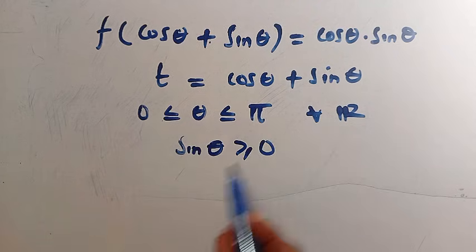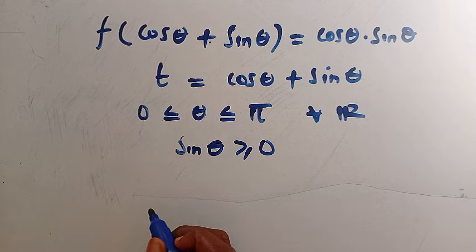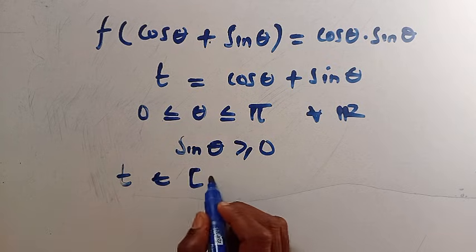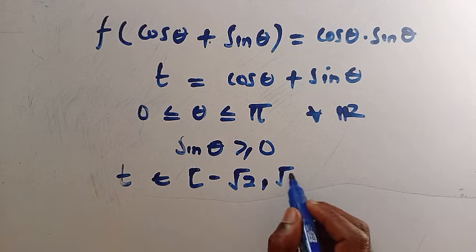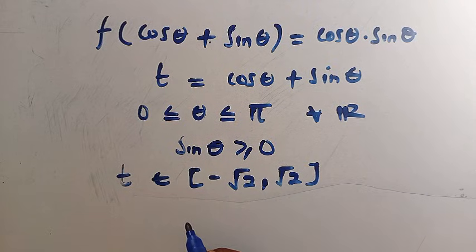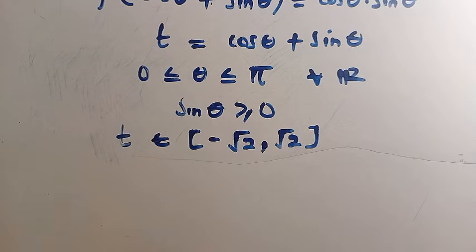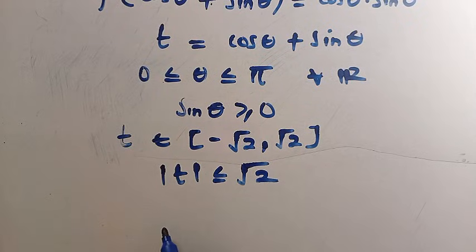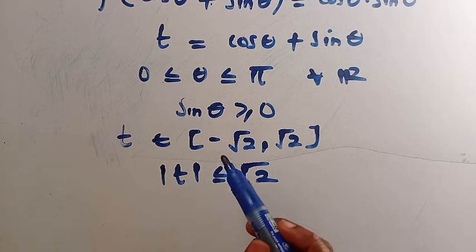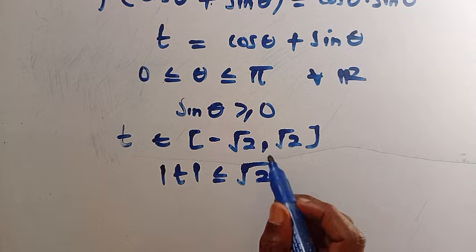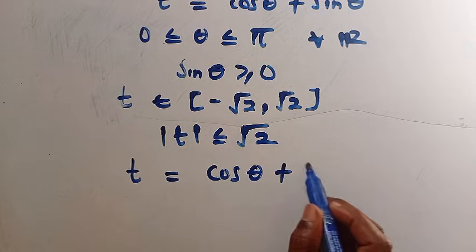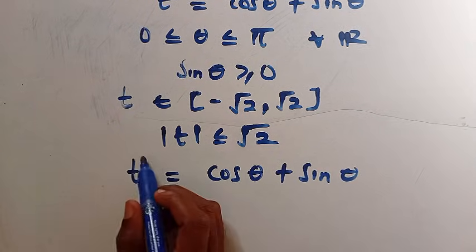Since t = cos θ + sin θ, the domain of t is a member of the interval [−√2, √2]. This is because the absolute value of t is always less than or equal to √2. To find the value of t more precisely, let's take the square of both sides of t = cos θ + sin θ.